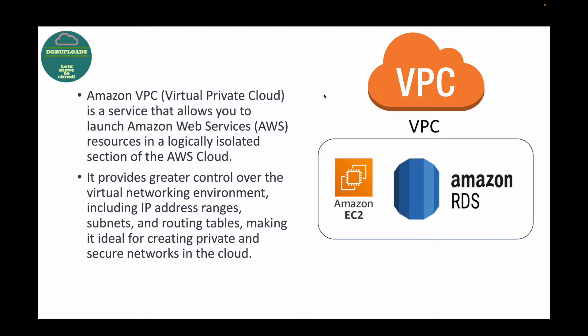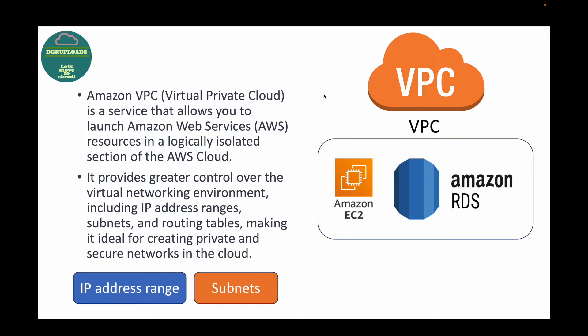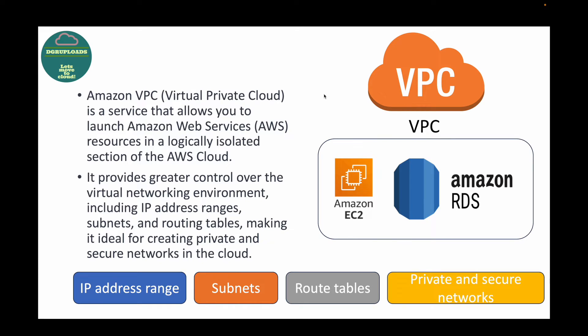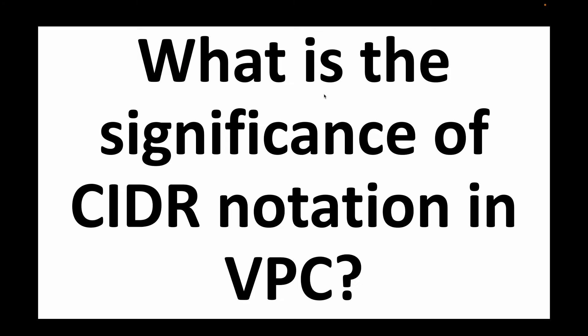VPC provides great control over your virtual networking environment, including your IP address range. By using this service you can define what IP address range you want, how many subnets you want, and your routing, which makes it ideal for creating private and secure networks in the cloud. So basically if you want to create your own custom networks with your own IP address range and your own routing, we can make use of VPC for that.